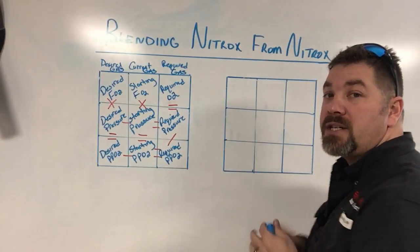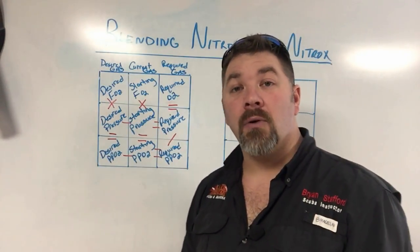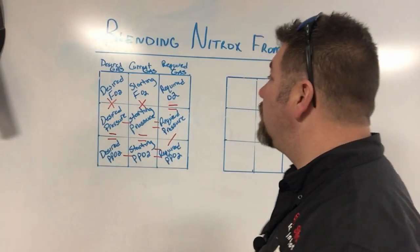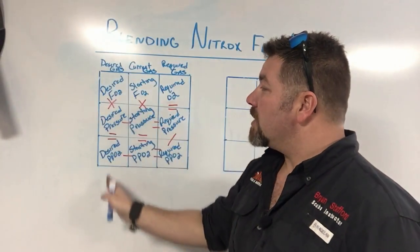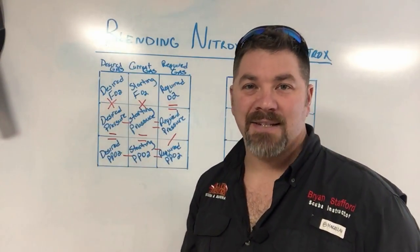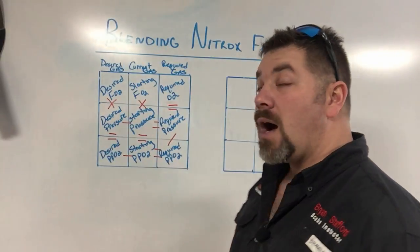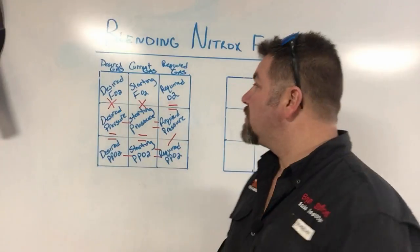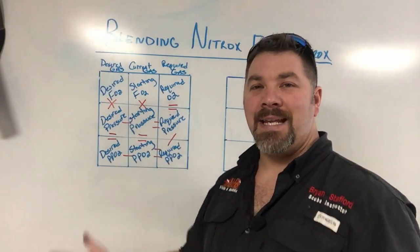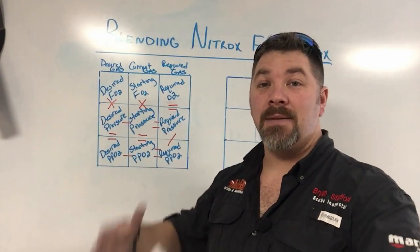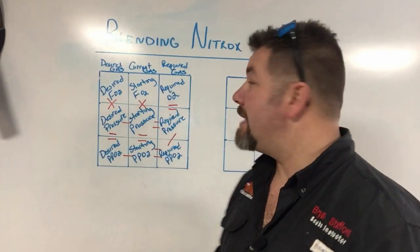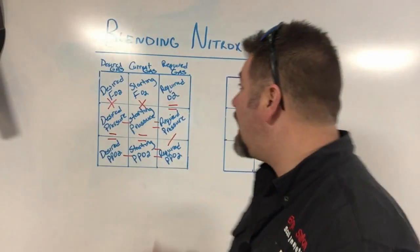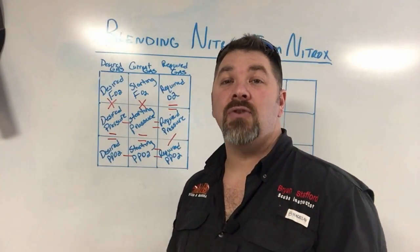We're going to do the calculations in both Imperial and metric. On the first column, we'll call that the desired gas column. The middle column is the current gas column, and on the end is the required column. The desired column is the ending pressure or how much I want to make for another dive. The current gas is how much I have left over after a given dive, and the required gas is how much I need to add.